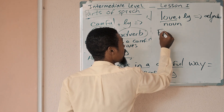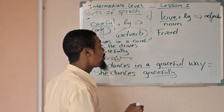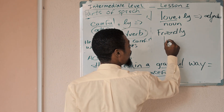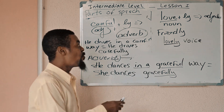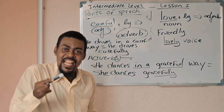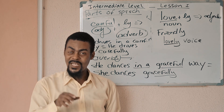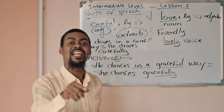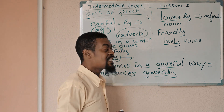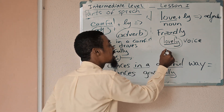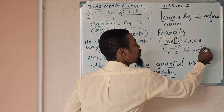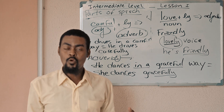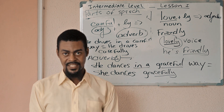For example, let's look at the word friend. Friend is a noun. Friendly is not an adverb — it's an adjective. She has a lovely voice. Just as I said, when you have a noun plus LY, it does not turn out to be an adverb — it becomes an adjective. Lovely is an adjective. He is friendly — friendly is not an adverb, it's an adjective. It qualifies John, tells you about him. He's friendly. He's lovely.